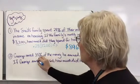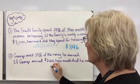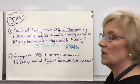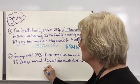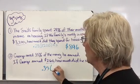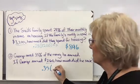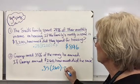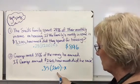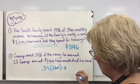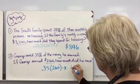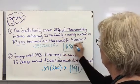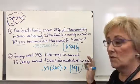George saved 35% of the money he earned. If George earned $260 — that is the total amount he earned — how much did he save? I can set this up as an equation: 0.35 times $260 will give me how much he saved. Putting this in the calculator, he saved $91 for the month. Hopefully you're getting them right so far.